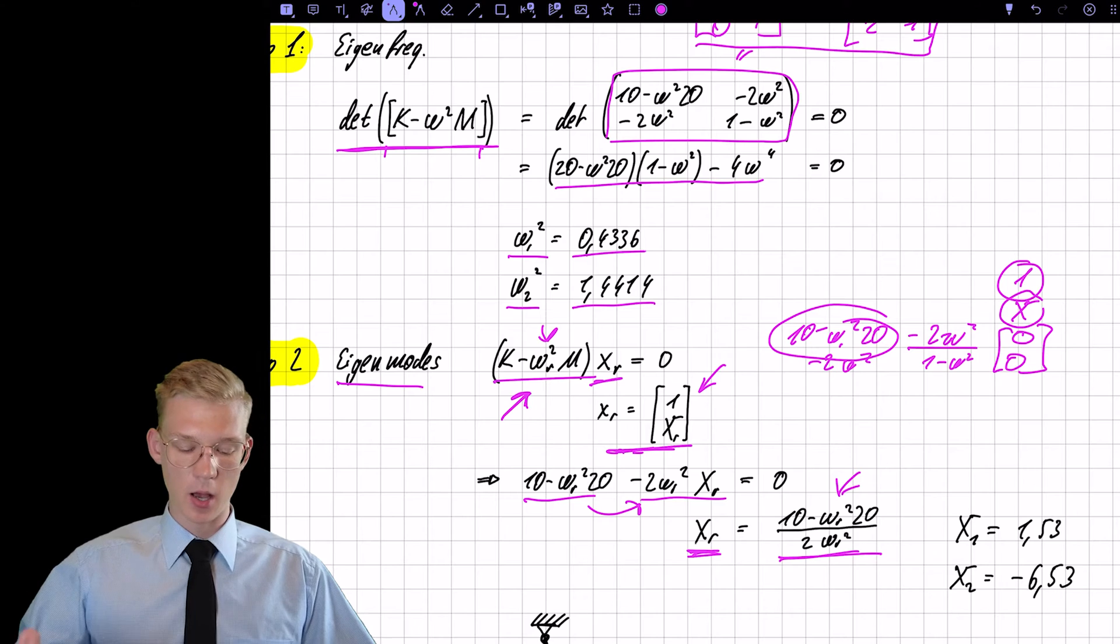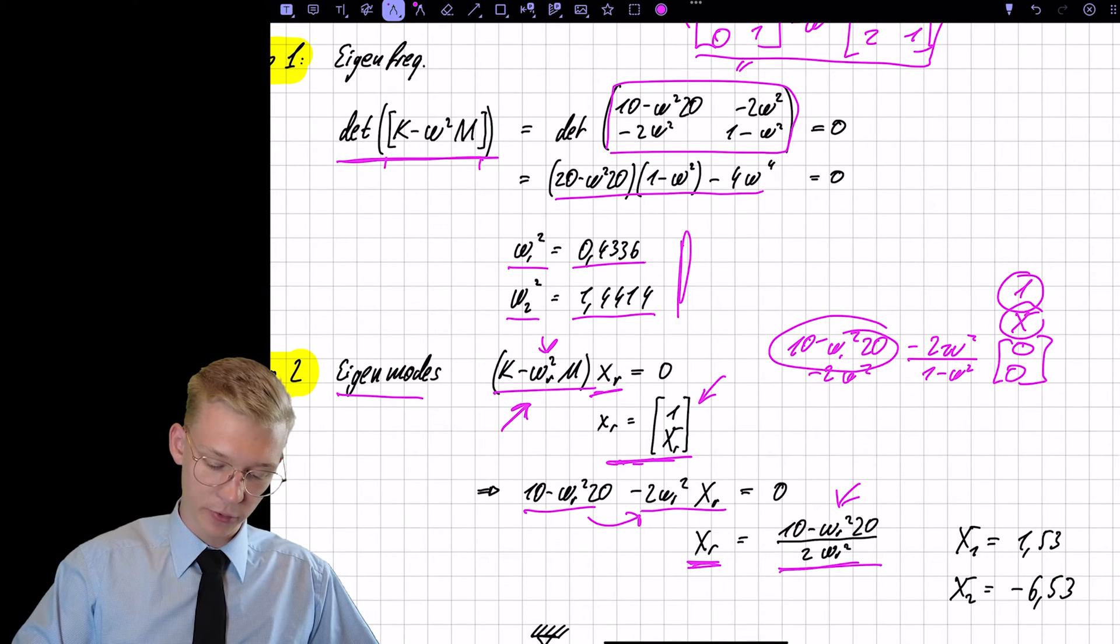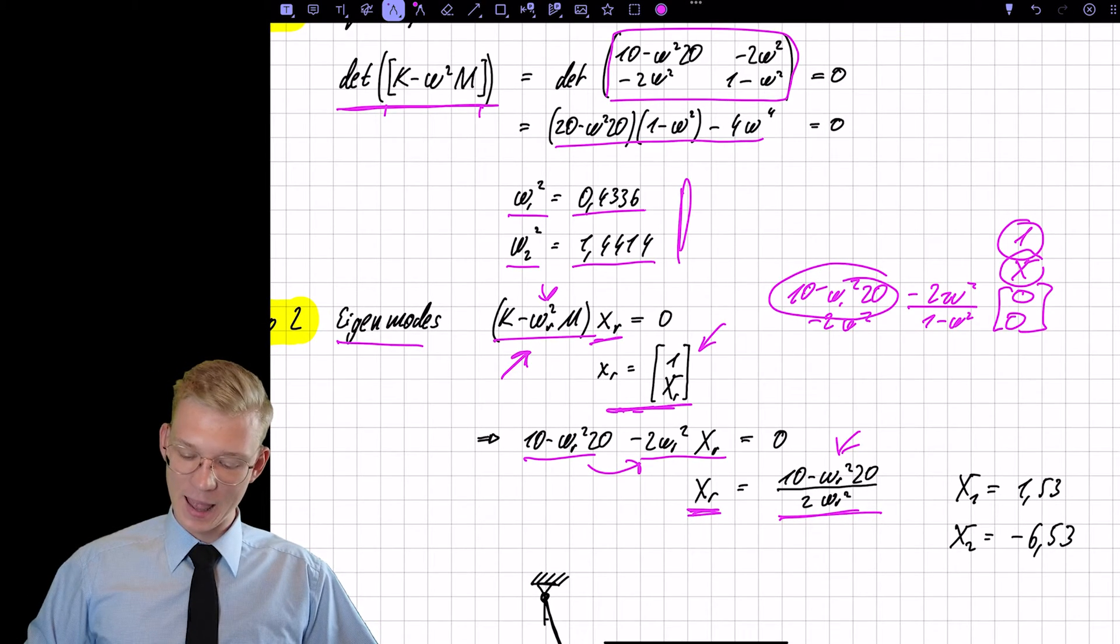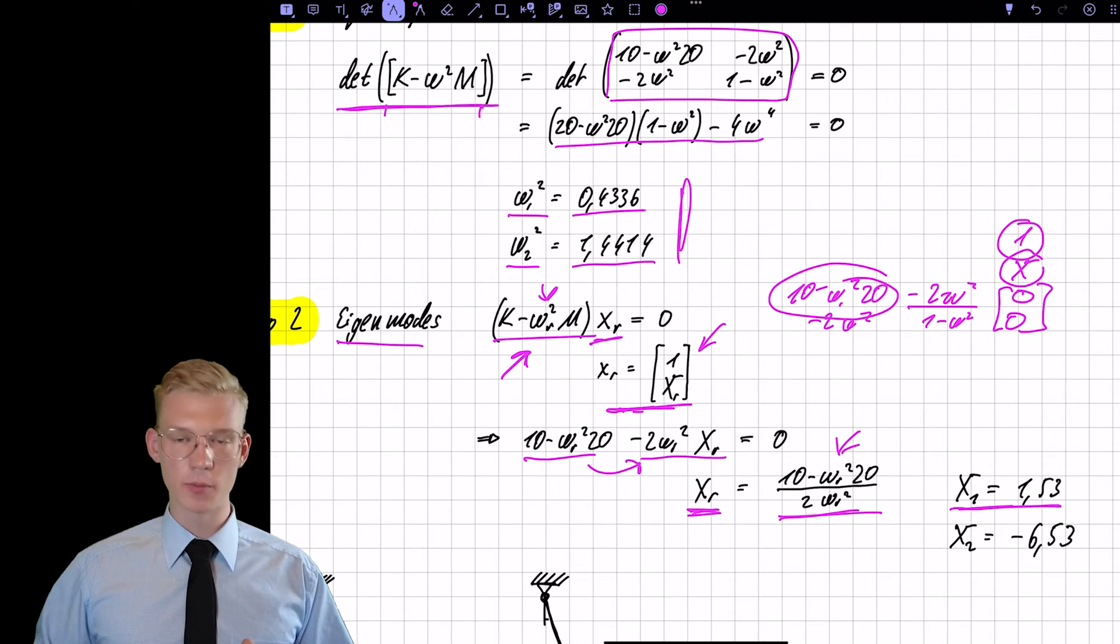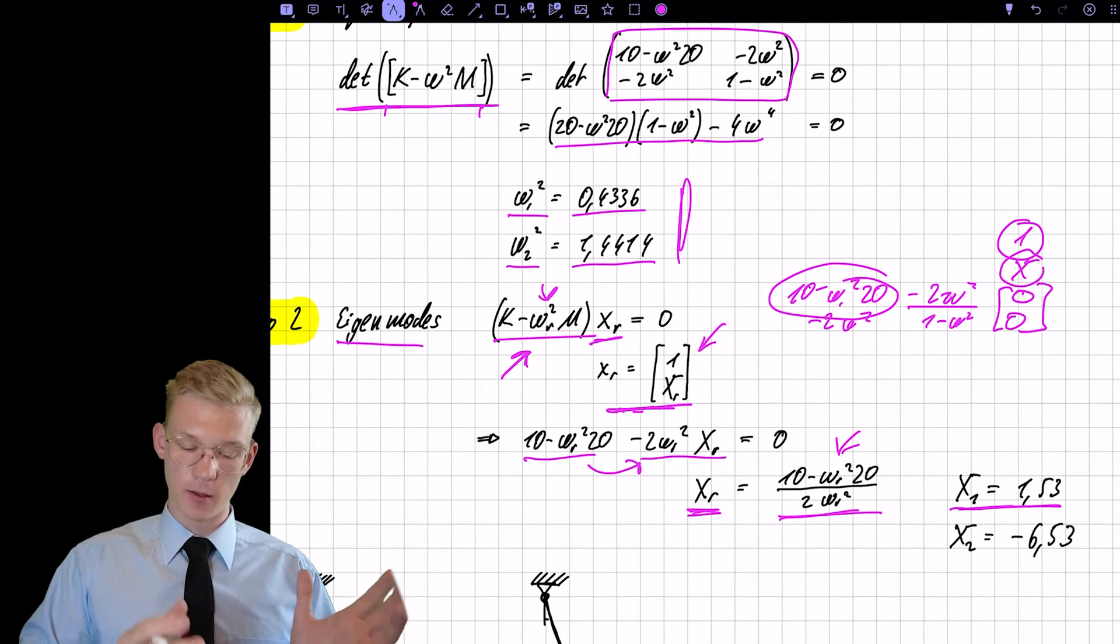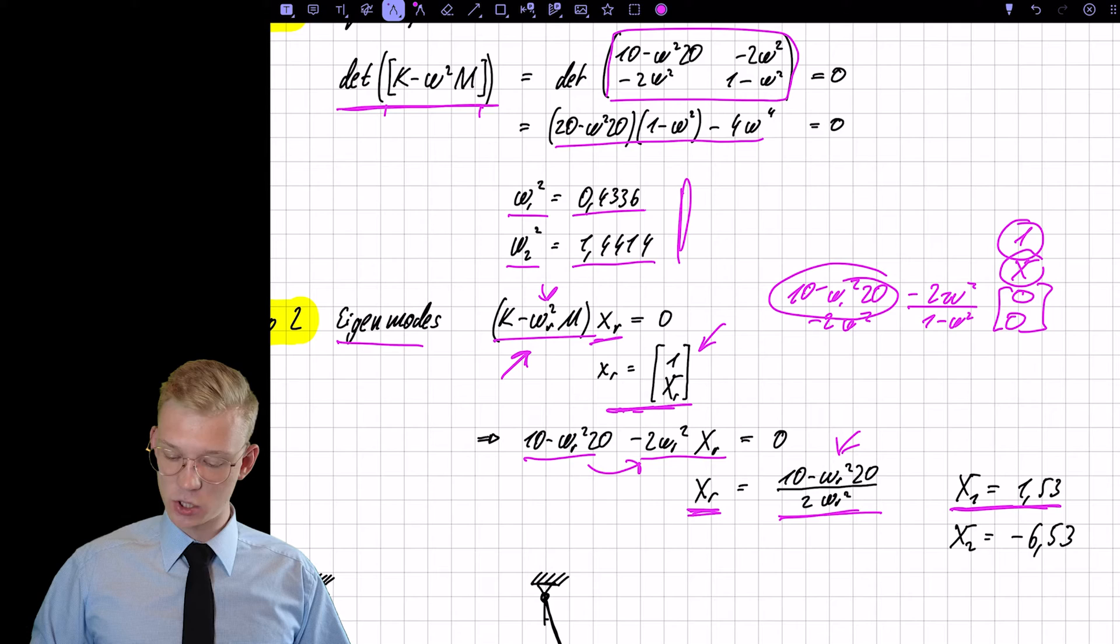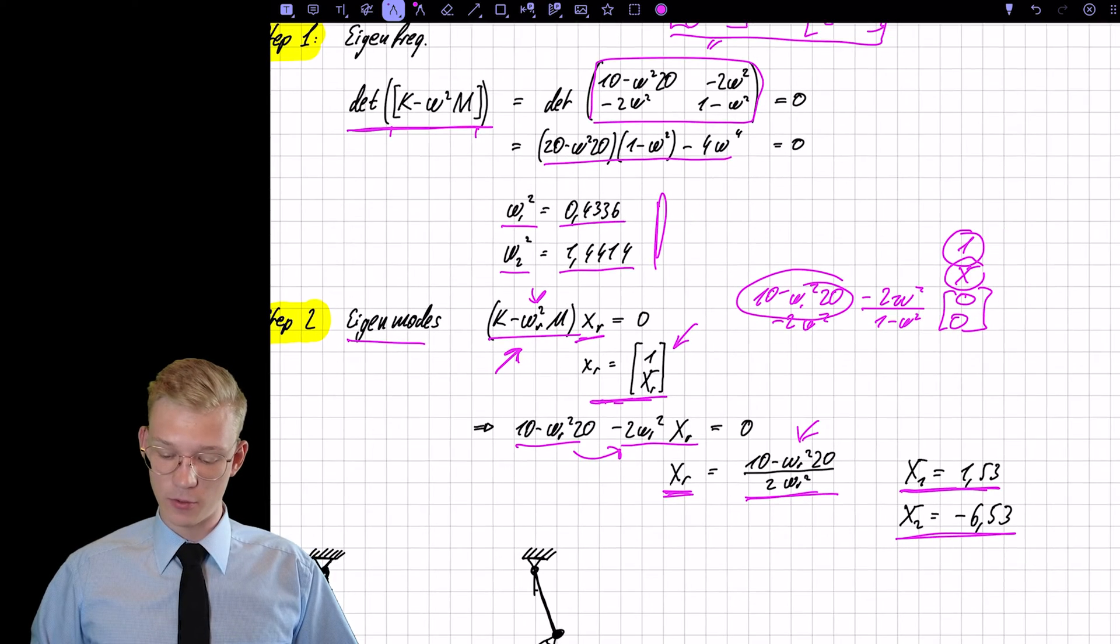Now we have to input our omegas, our eigenfrequencies that we found before and we find our missing terms in our eigen shapes. So the first eigen shape is 1.53 and the second one is minus 6.53.